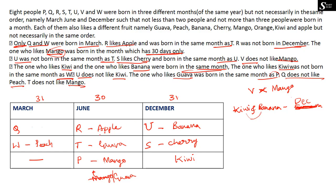With all other fruits assigned, only orange remains unassigned. Going through the list: P–mango, Q–?, R–apple, S–cherry, T–guava, U–banana, V–kiwi, W–peach. The only person without a fruit is Q, so Q likes orange. That completes the full arrangement.